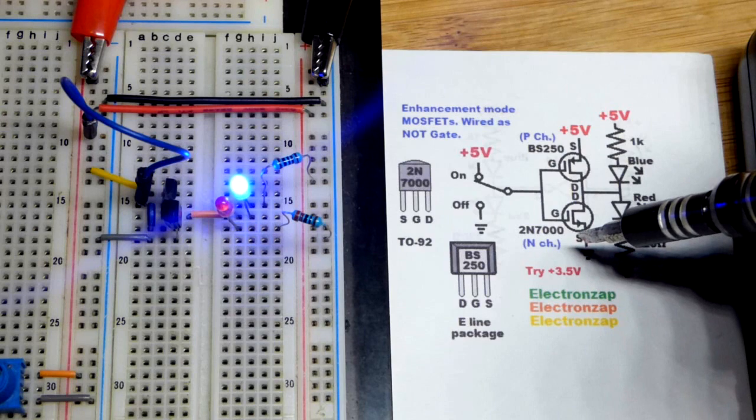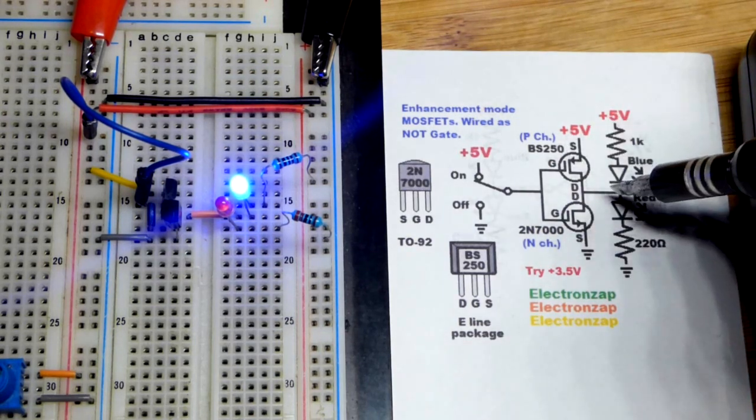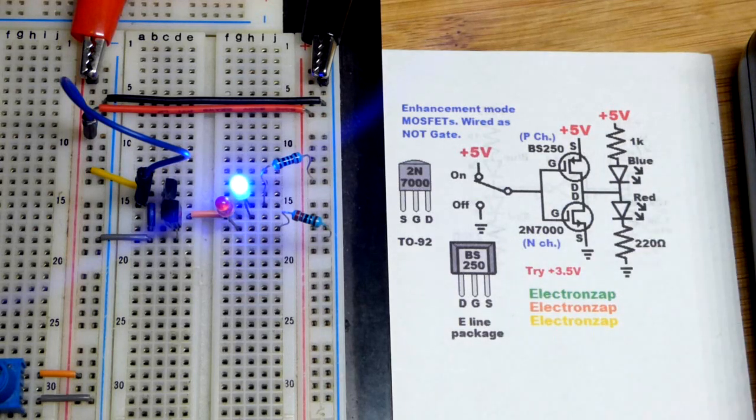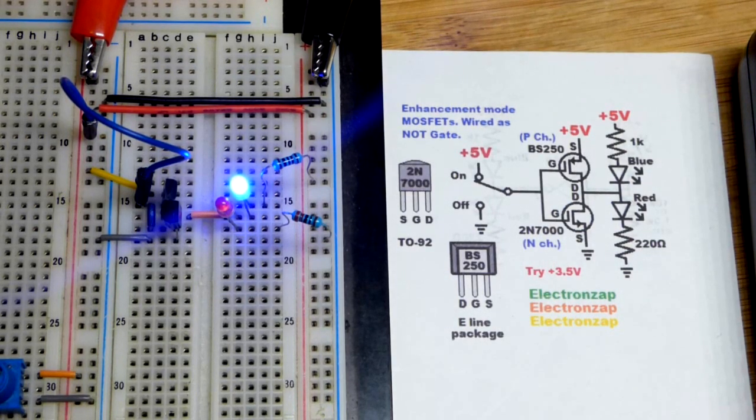Basically MOSFETs are mostly used as switches, high or low, either positive or negative. So in any case, there you can see the blue LED lights up. That is the basic property of this circuit. It's really that simple.